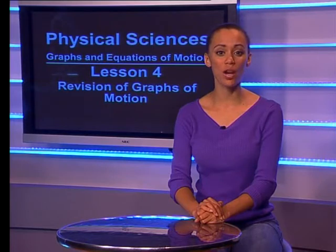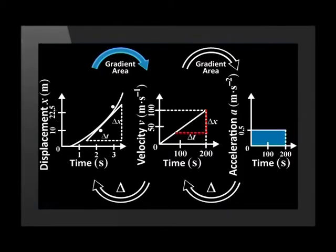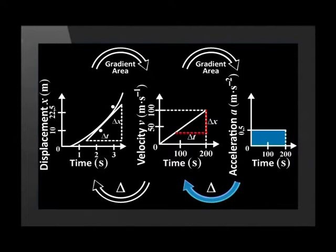We can summarize all of this in one diagram. The gradient at specific points in time on the displacement versus time graph gives us the instantaneous velocity. The gradient of the velocity versus time graph can be used to calculate the acceleration. The area under the acceleration versus time graph gives the velocity, while the area under the velocity versus time graph can be used to calculate the displacement at that point in time.